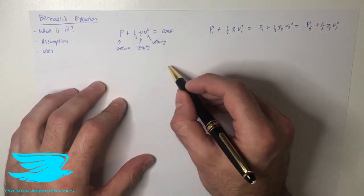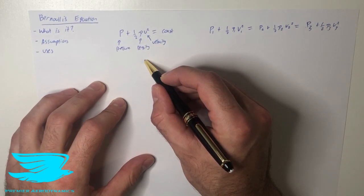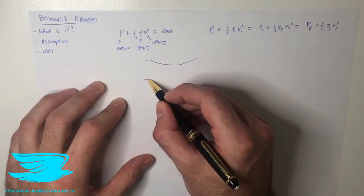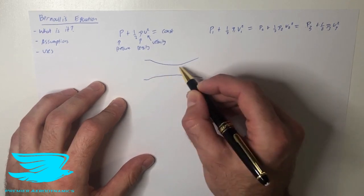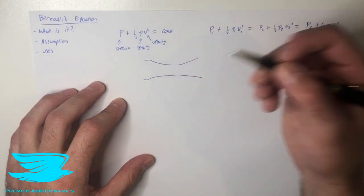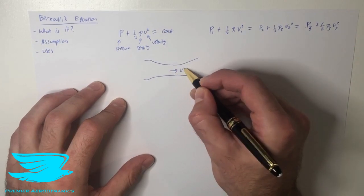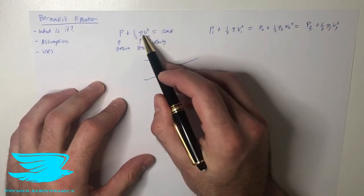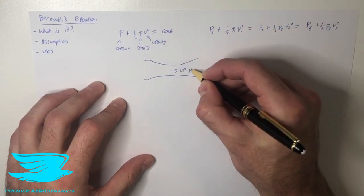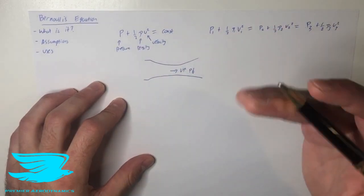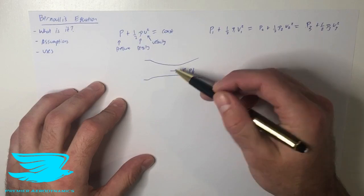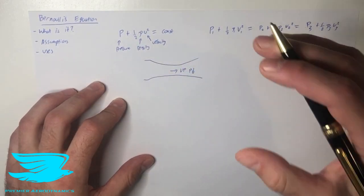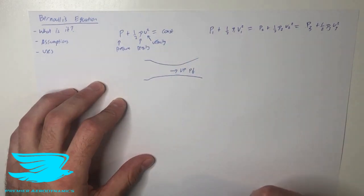For example, if we have a duct which converges and then diverges, because the cross-section reduces and the density stays the same, the velocity must increase. And from Bernoulli's equation, we know that if the velocity increases and the density stays the same, the pressure must decrease in order to compensate. So just by knowing that the velocity increases because the cross-sectional area reduces in this duct, we know the pressure must also decrease to counteract that.